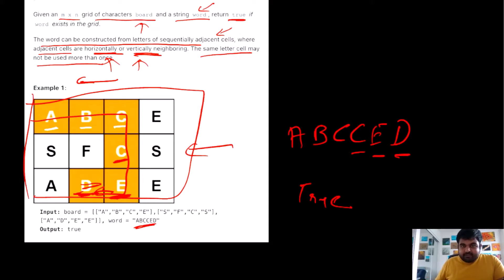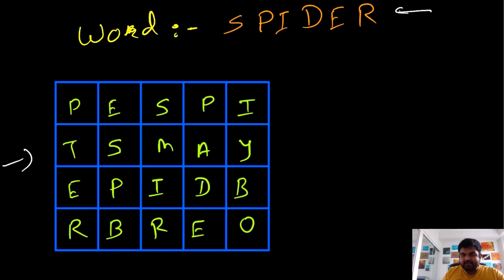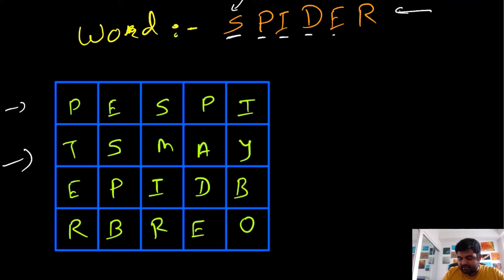We have solved similar problems in the past using DFS and backtracking, and that is what we are going to do for this problem as well. In this custom example we need to find the word 'spider' on the given board. The idea is simple: we take the first character 'S' and iterate over the matrix until we find it. The moment we find it, we keep trying to find the next letters in neighboring cells of the board.